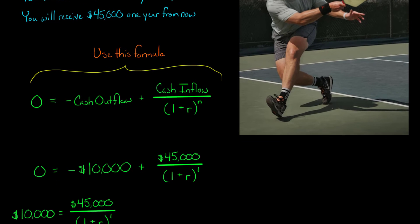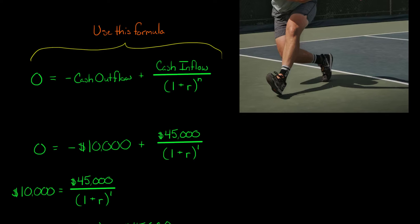And again, it's to the first power because the cash inflow is occurring one year from today. So I just add 10,000 to both sides of the equation. So now we have 10,000 equal to 45,000 divided by one plus R.